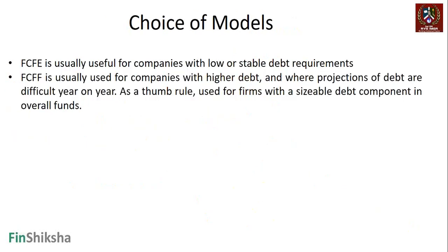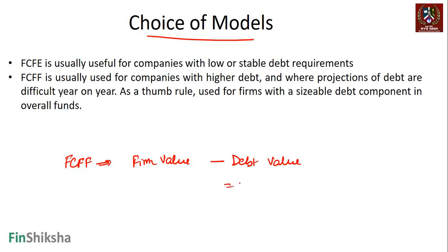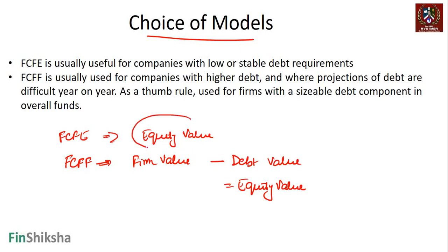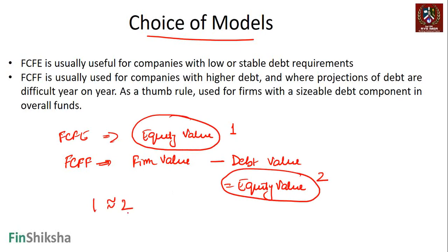The next important part is identifying which model to use. If doing FCFF, it gives you the firm value; subtracting debt value gives equity value. FCFE directly gives you equity value. Under ideal circumstances, the equity value derived from both methods — call them value one and value two — should be approximately equal. If they are materially different, something is wrong.